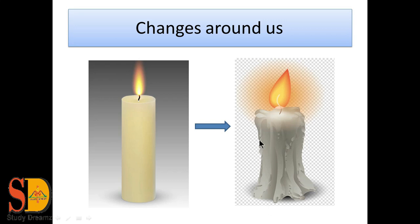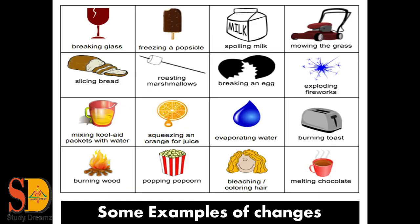There are some more examples of changing. First we have breaking of glass — after breaking the glass, the size of the glass gets changed. Next is freezing of a popsicle — after freezing the liquid, this ice cream is obtained as you can see in this picture. Next is spoiling of milk — after the spoilage of milk, the property of the milk gets completely changed. Next is mowing the grass — with the cutting of grass, the shape and size of the grass is completely changed.